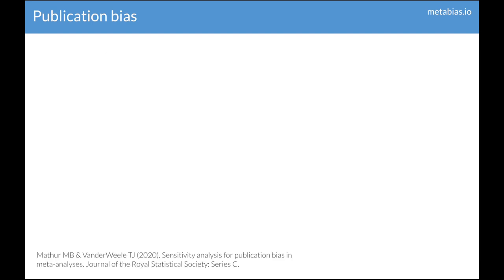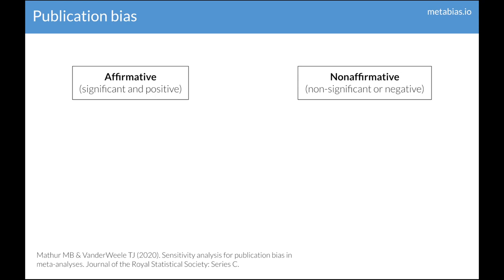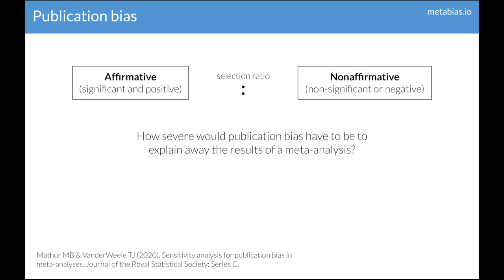Here's a sensitivity analysis approach to the issue. We'll consider results to be affirmative if they're significant and positive, and non-affirmative if they're non-significant or negative. We consider a model of publication bias where there's some fixed selection ratio, and affirmative results are more likely to be published than non-affirmative results by this unknown ratio. Then, given the actual observed affirmative and non-affirmative studies, we can ask how severe would publication bias have to be — i.e., how large would the selection ratio need to be — for the meta-analytic effect to be explained away, meaning the observed point estimate to be shifted to the null. The larger this value, the more robust the meta-analysis is to publication bias.